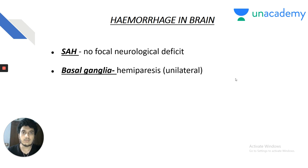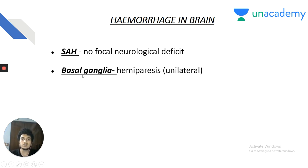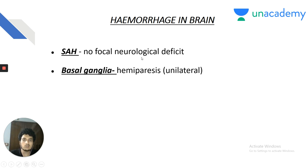Basal ganglia bleed: the most common site is the putamen. Putamen bleed produces unilateral hemiparesis. The most common cause of basal ganglia bleed is hypertension. Thalamic bleed: since all sensations relay in the thalamus, there is only hemi-anesthesia initially — hemiparesis may occur in later stages. Identifying brain structures on CT: bone appears white in CT images. Lateral to the caudate nucleus is the putamen, and lateral to the putamen is the globus pallidus.